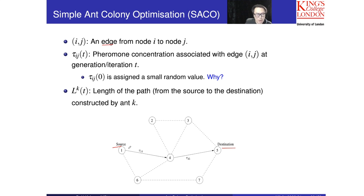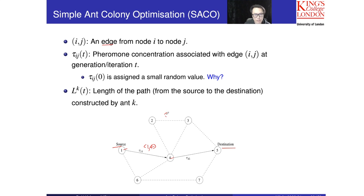So this is the notation for the edge: tau(i, j) at time t. That is the pheromone concentration at the edge. For example, we will have tau(2, 3) at iteration t. That means this tau value is changing according to the iteration. We will learn how to update this tau value later on. For example, tau(3, 5) at time t.